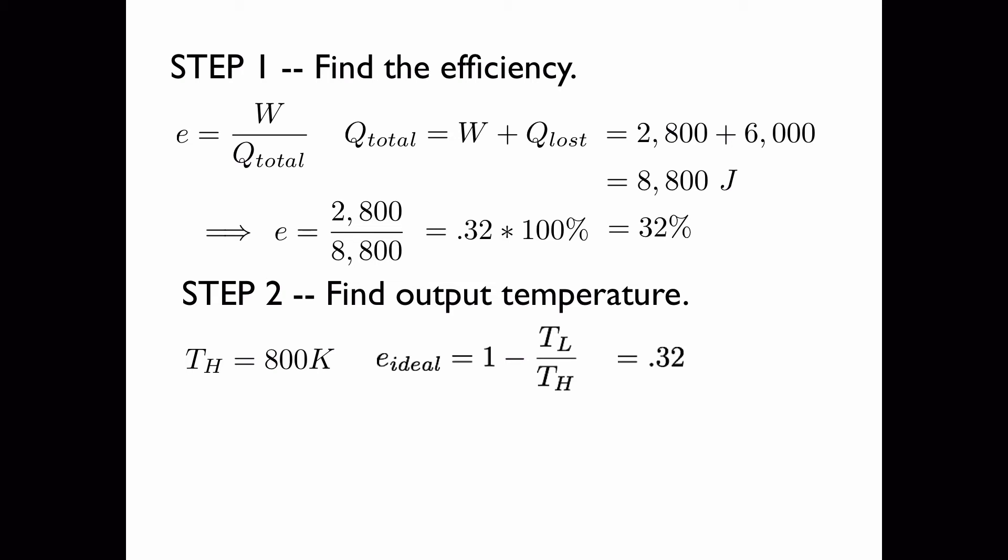Now if I subtract 0.32 from both sides, and add T_L over T_H to both sides, I get this equation. Which is equal to this equation if I plug in 800 for T sub H.